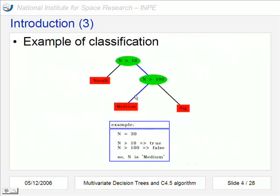A simple example, just one attribute and two tests. Here are the leaves that we call the classes. And here are the nodes that contain tests connected to two or more nodes. Here, in this example, n is 30. 30 is higher than 10. n is not higher than 100. So, it comes to this side and it's classified as median.